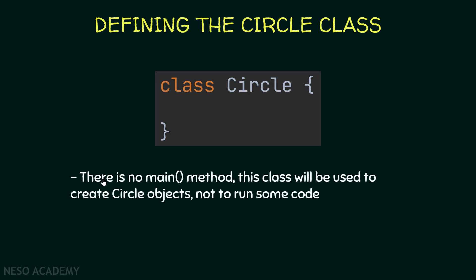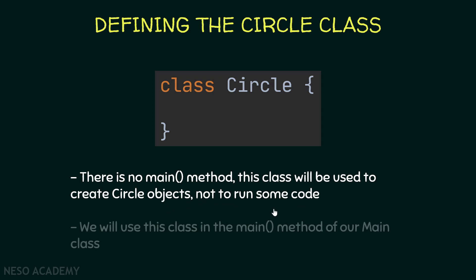Notice that in this class there will be no main method. This class will be used to create Circle objects, not to run code directly. We will use this class in the main method of our main class, just like we use the String class or the Point class — to create Circle objects. So we don't need a main method here.